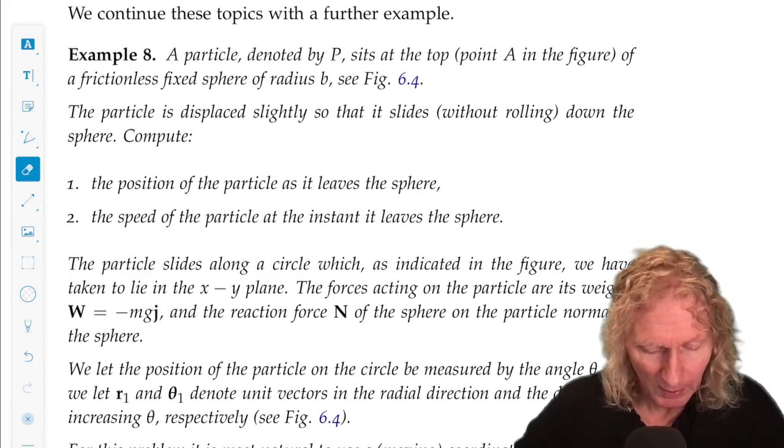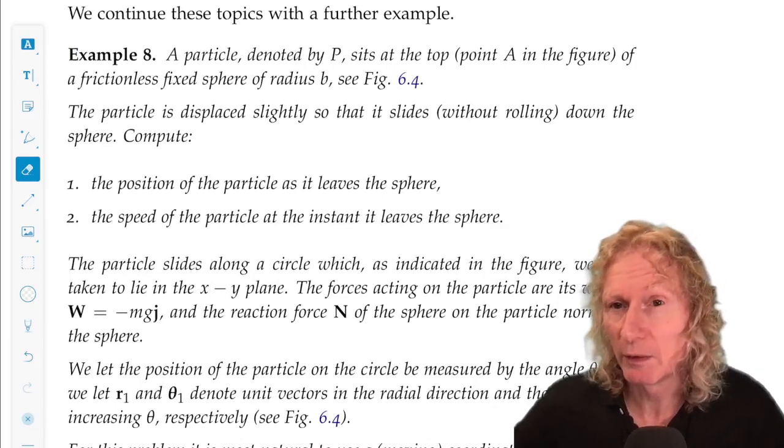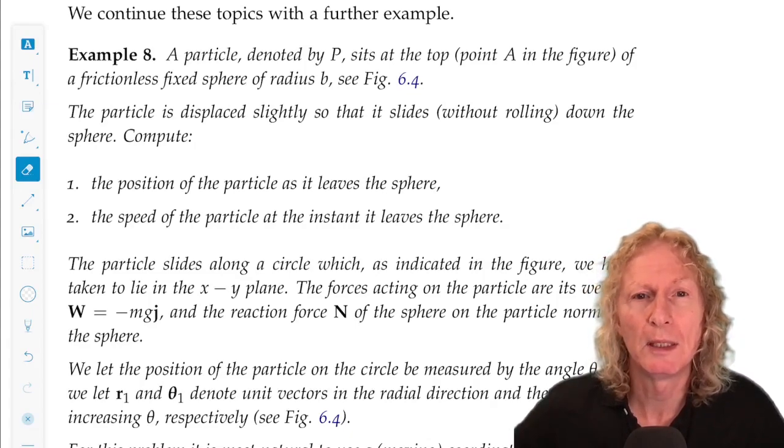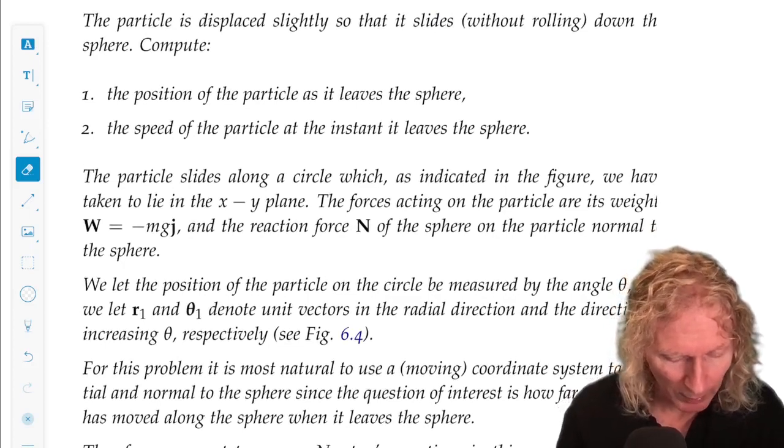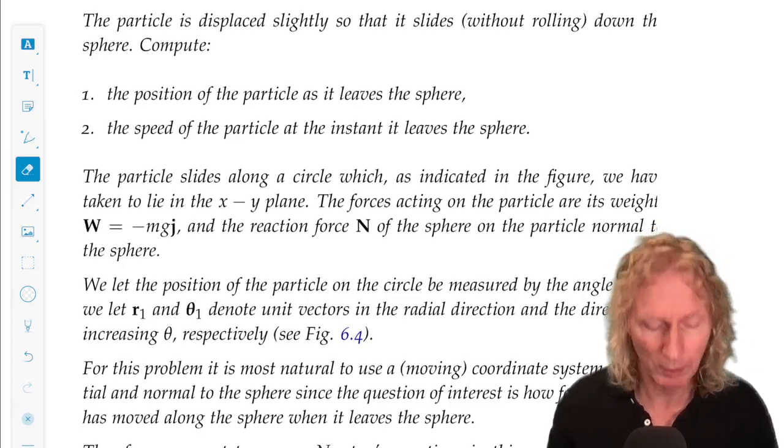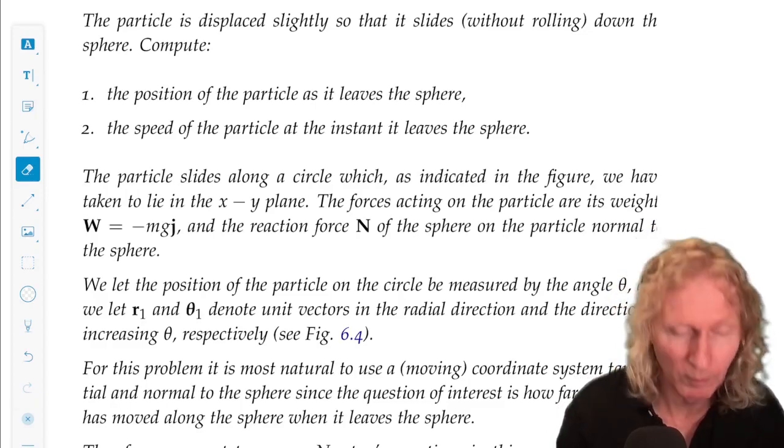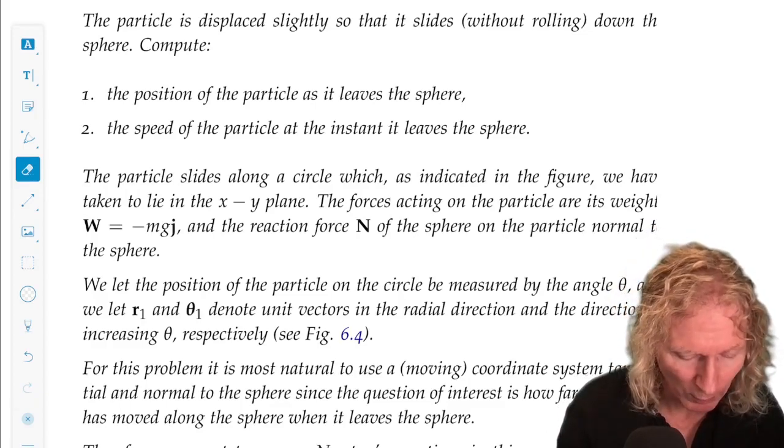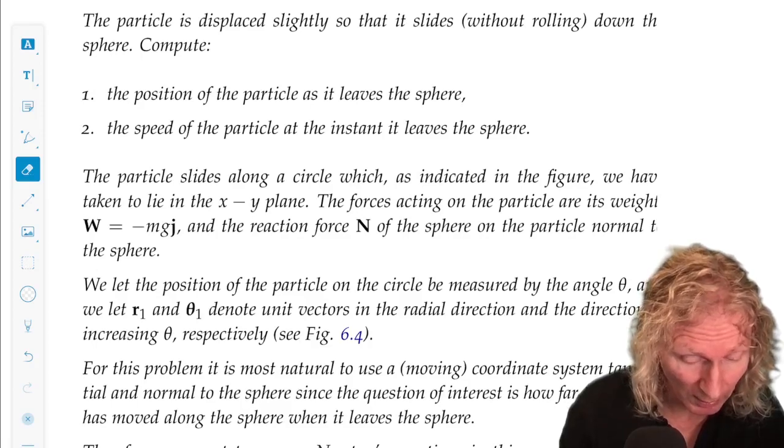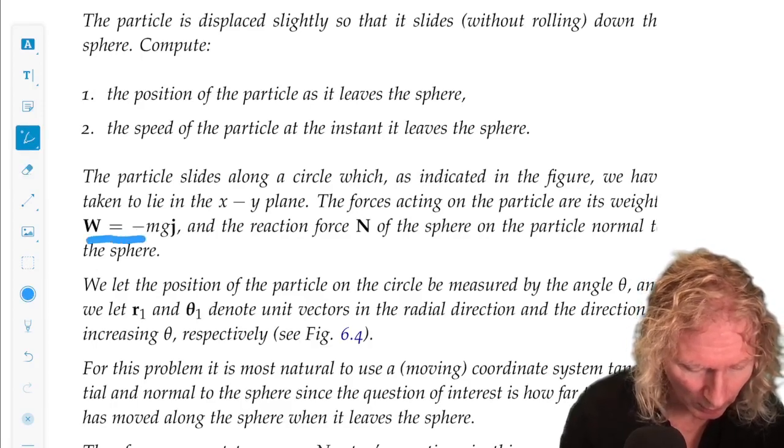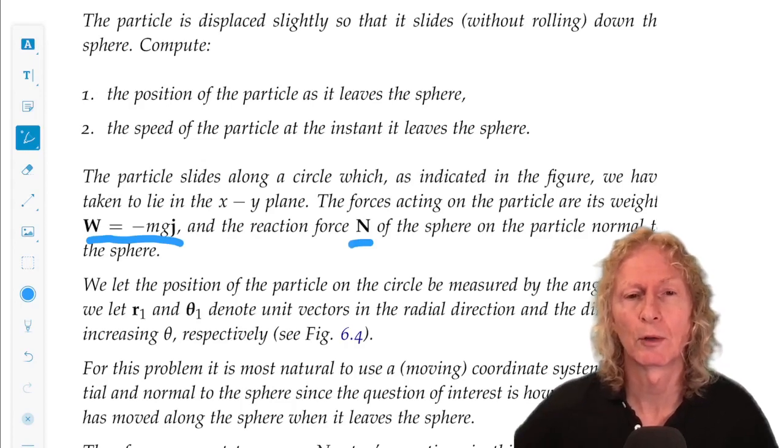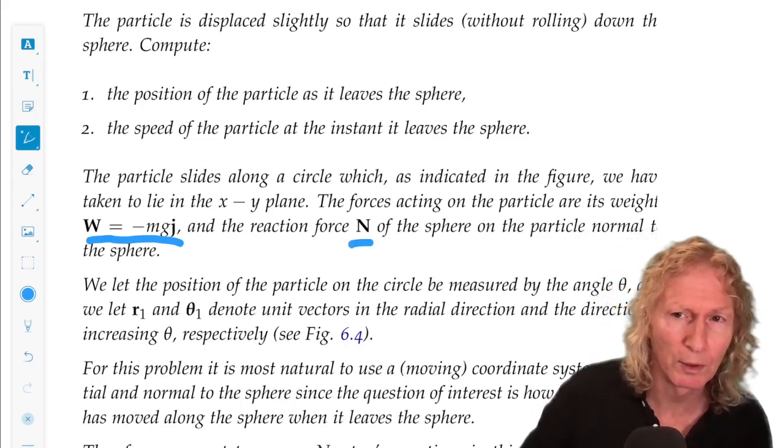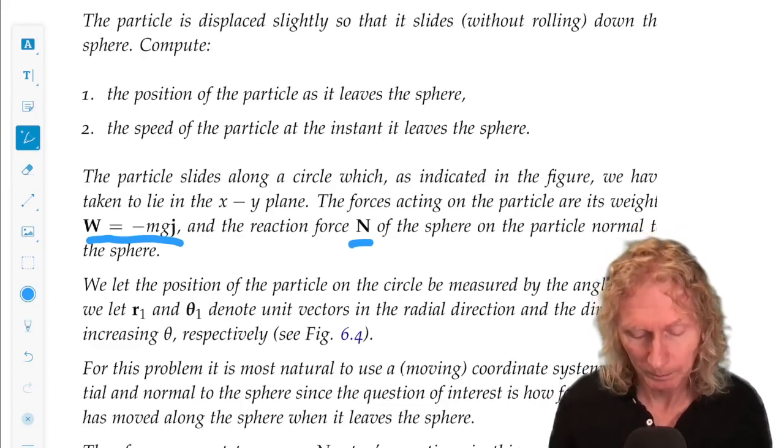So we want to know two things: the position of the particle as it leaves the sphere, and the speed of the particle at the instant it leaves the sphere. Now, the only forces acting on the particle would be gravity, and if the horizontal unit vector is I and the vertical unit vector is J, then the only force acting on the particle is gravity downwards and the normal force. Particle presses down on the sphere due to gravity. Sphere presses straight back. Newton's third law.